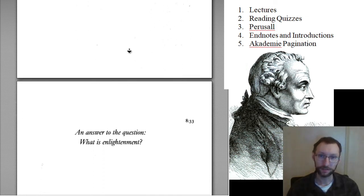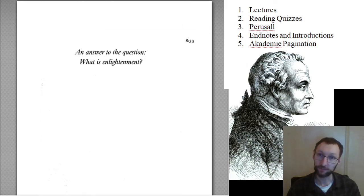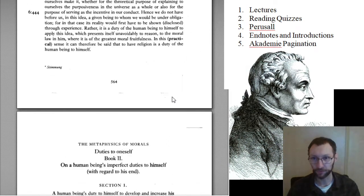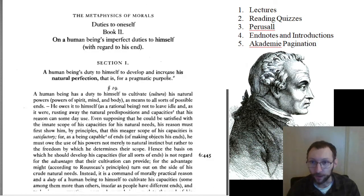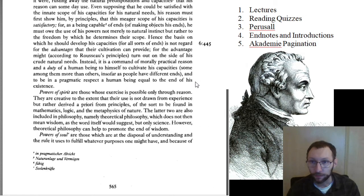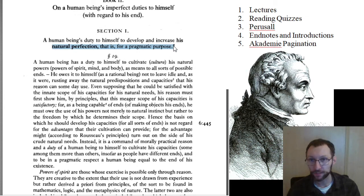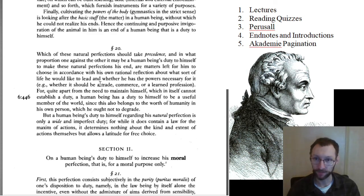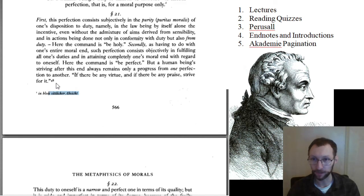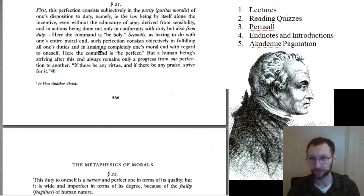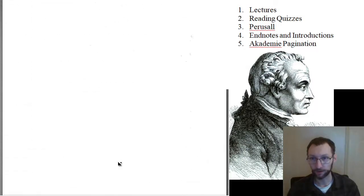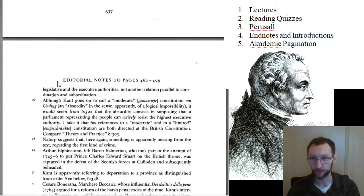Every once in a while in the text there are footnotes, which usually talk about translation — a lot of them just give you the German word. Sometimes you have numbers, which are end notes, and you go to the very end of the book to find them. These are editor's notes on things — editorial notes, arranged per essay. So for example, here's the Metaphysics of Morals, and here are all the notes from the Metaphysics of Morals.